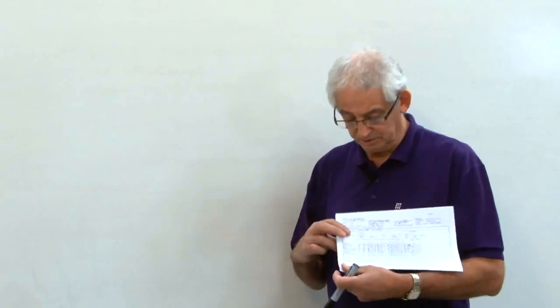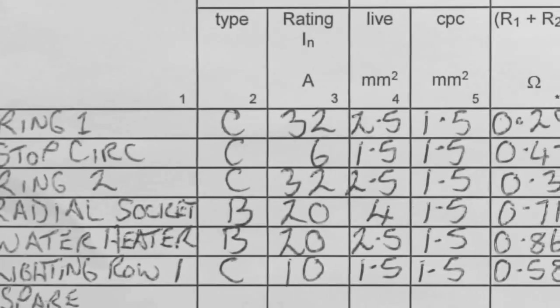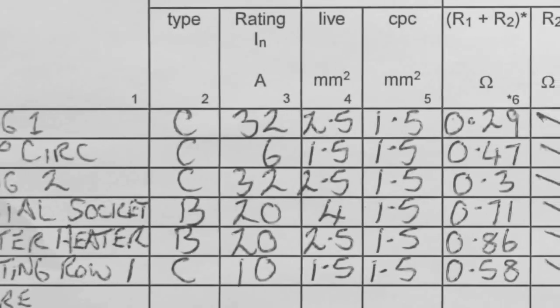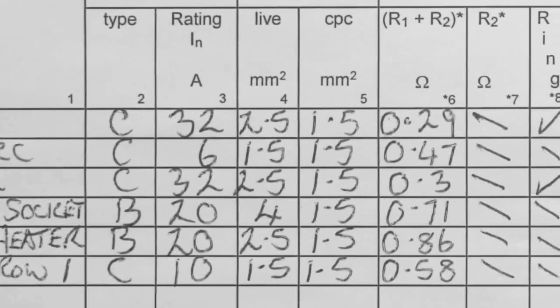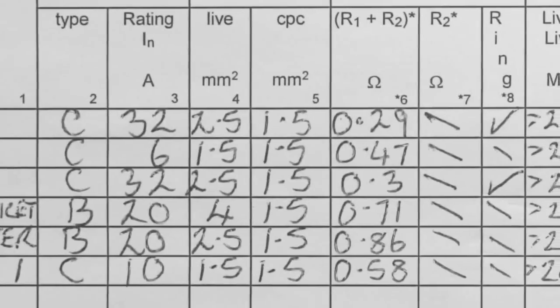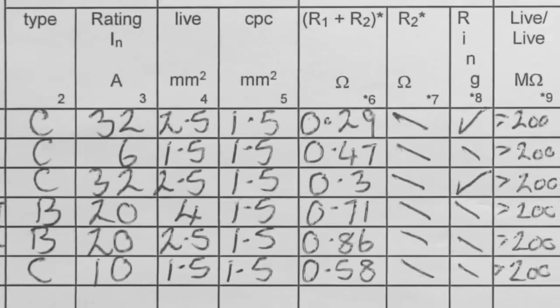However, because when we're doing a periodic inspection we've got certain values on our certificates, we can use those values to help us in calculating volt drop. For instance, on this certificate here I've got various circuits and if we take circuit 4 we've got a 20 amp circuit wired in 4mm with a 1.5 CPC and we've got an R1 and R2 value of 0.71. That's all the information I need to calculate the volt drop in that circuit.